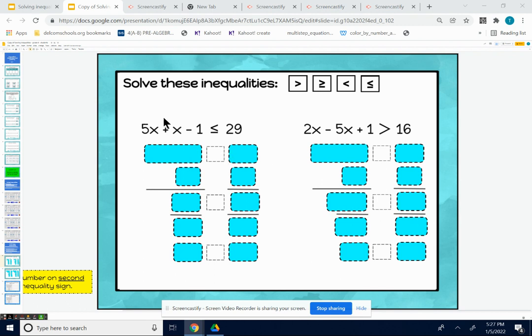The second thing you want to look for is like terms. We have a set of like terms: we have 5x and x. So we want to combine those together. 5x plus 1x is 6x. We're going to combine those and bring the rest of the problem down.